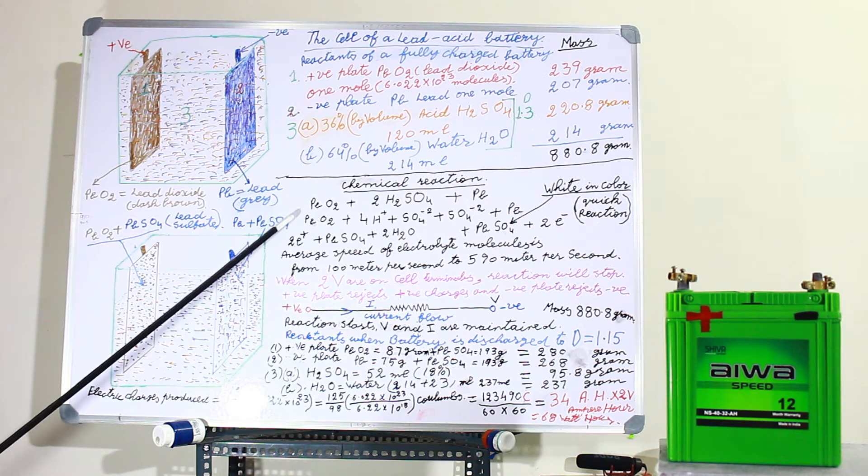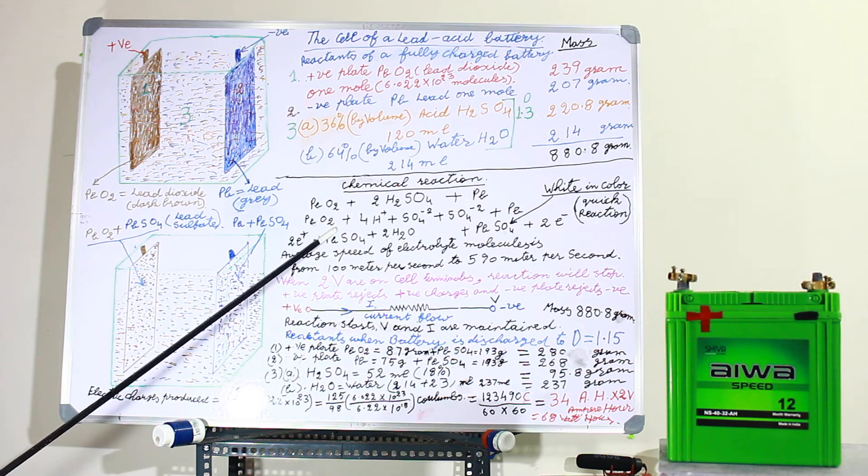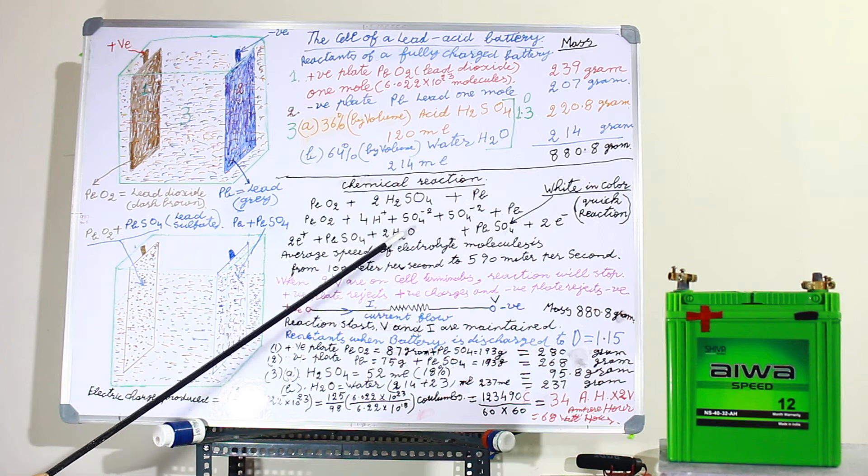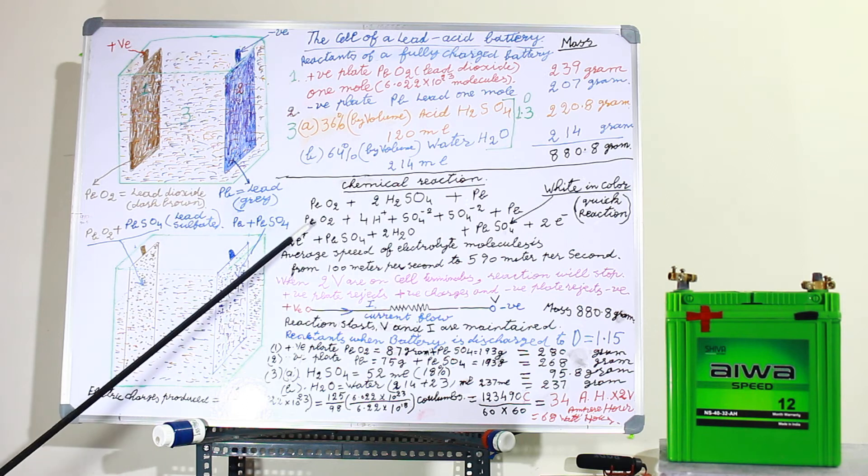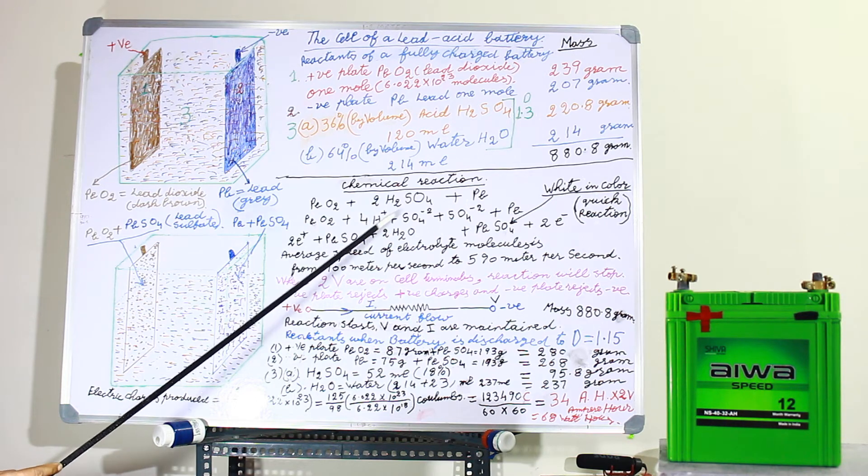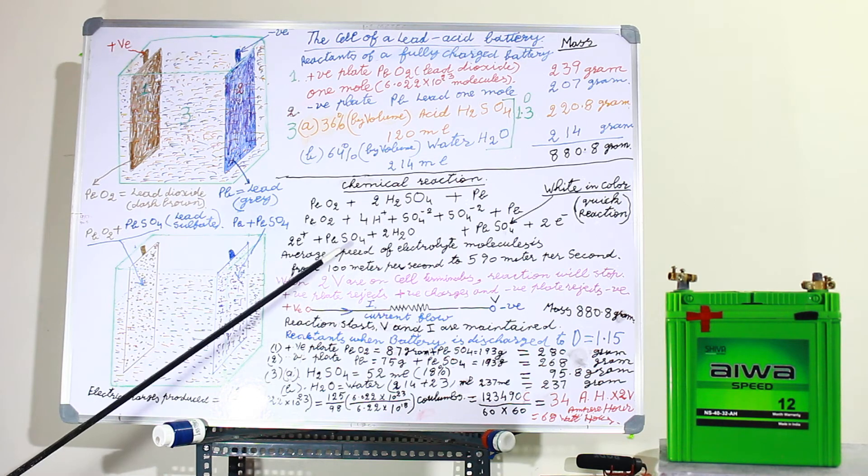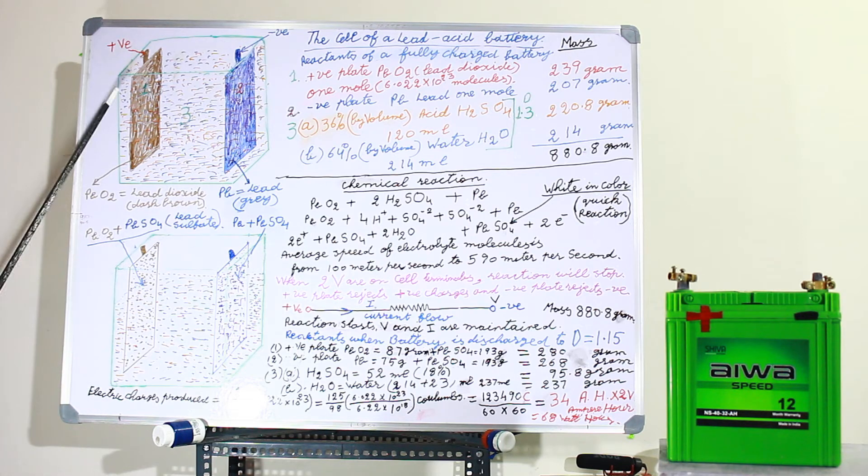This O2 of the lead dioxide will react with 4 hydrogen atoms and will produce 2 molecules of water, 2 H2O. Now this lead plus 2 of the positive charges and 2 of the negative charges of the sulfate will react and produce lead sulfate. It will be white in color. And there will be 2 positive charges, 2 electrons on the positive plate.